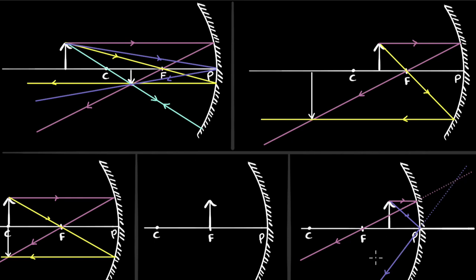Therefore, if you were to look at it from here, it will appear as if there is an image. So this time we get a virtual image. How do I know that it's erect? Erect images are always virtual images. It is behind the mirror, and you can see it is bigger in size than the object.